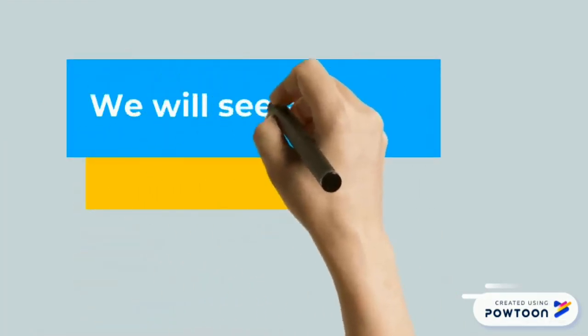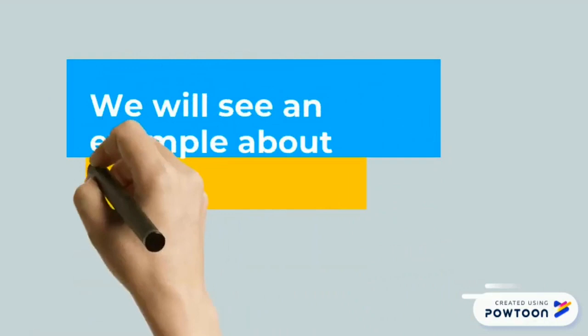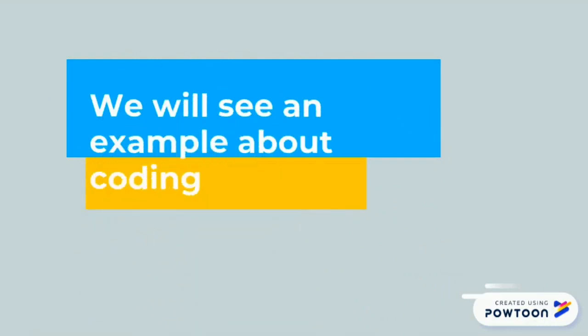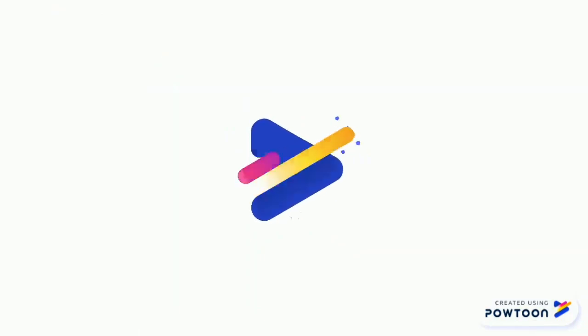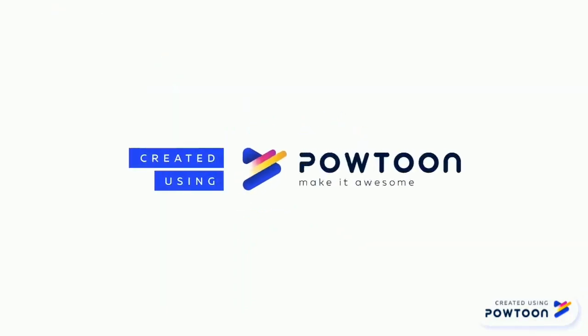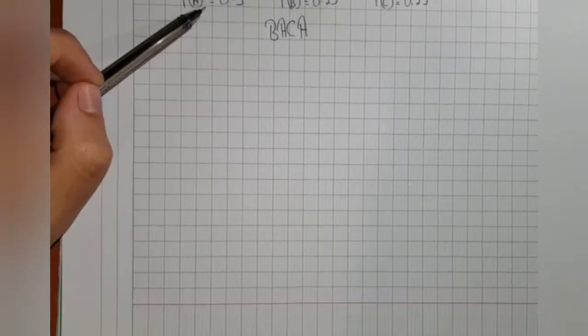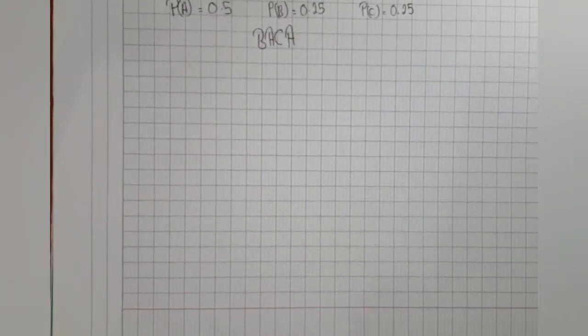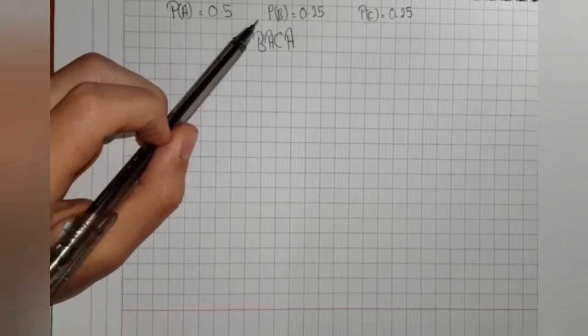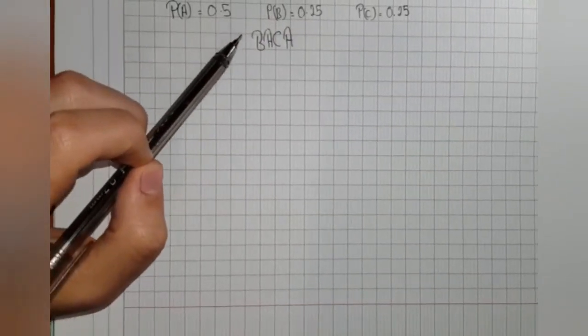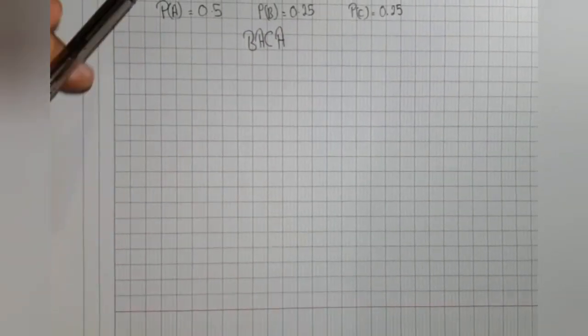Now we will see an example about coding. Let's start by the coding technique. These are the given probabilities for each symbol: pa equals 0.5, pb equals 0.25, and pc equals 0.25.